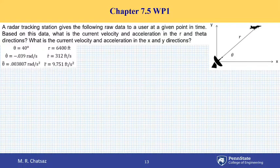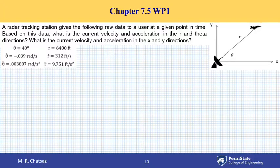Hello and welcome back. Here we have an example of curvilinear motion in a polar coordinate system, where a radar tracking station gives the following raw data to a user at a given point in time. Based on the given data, we are interested in finding the components of velocity and acceleration in polar coordinates in the R and theta directions, and then finding the rectangular components of V and A in the X and Y directions.